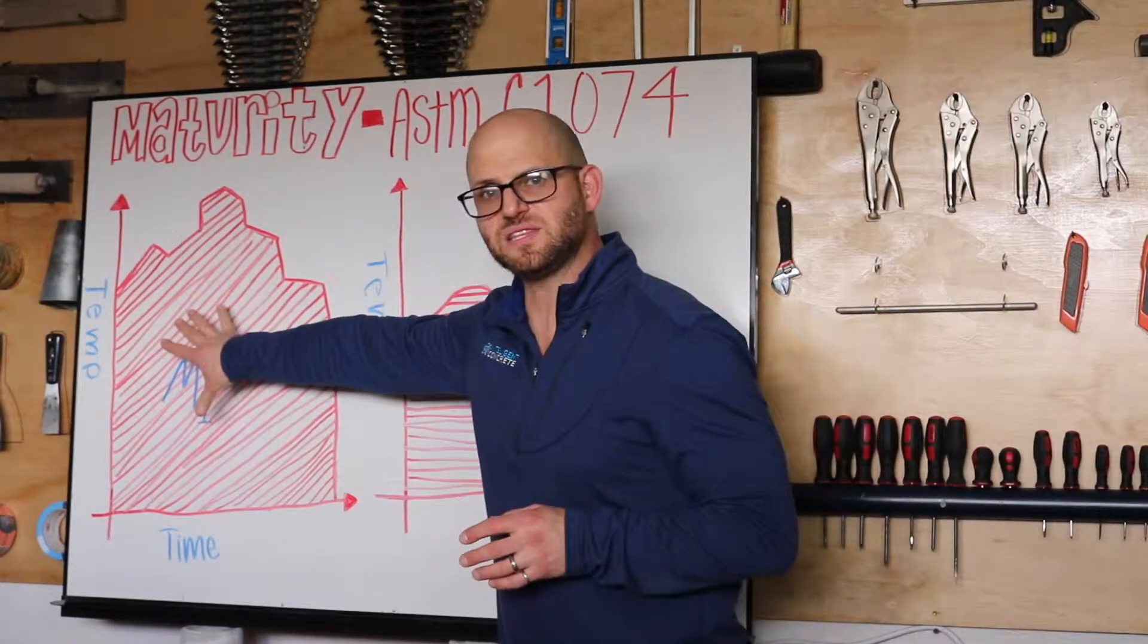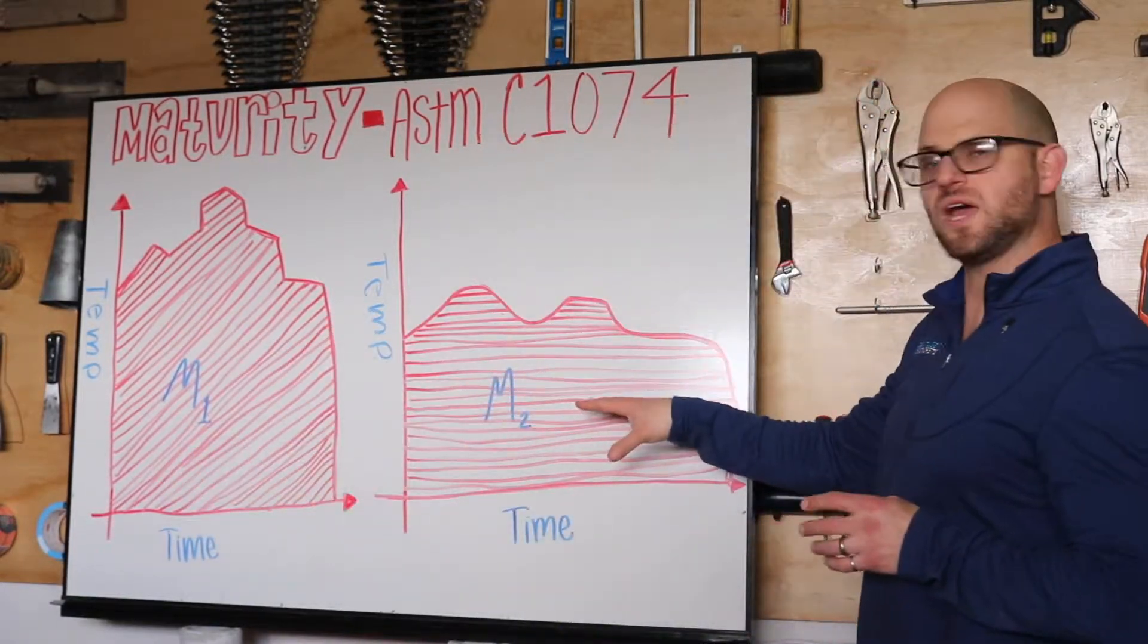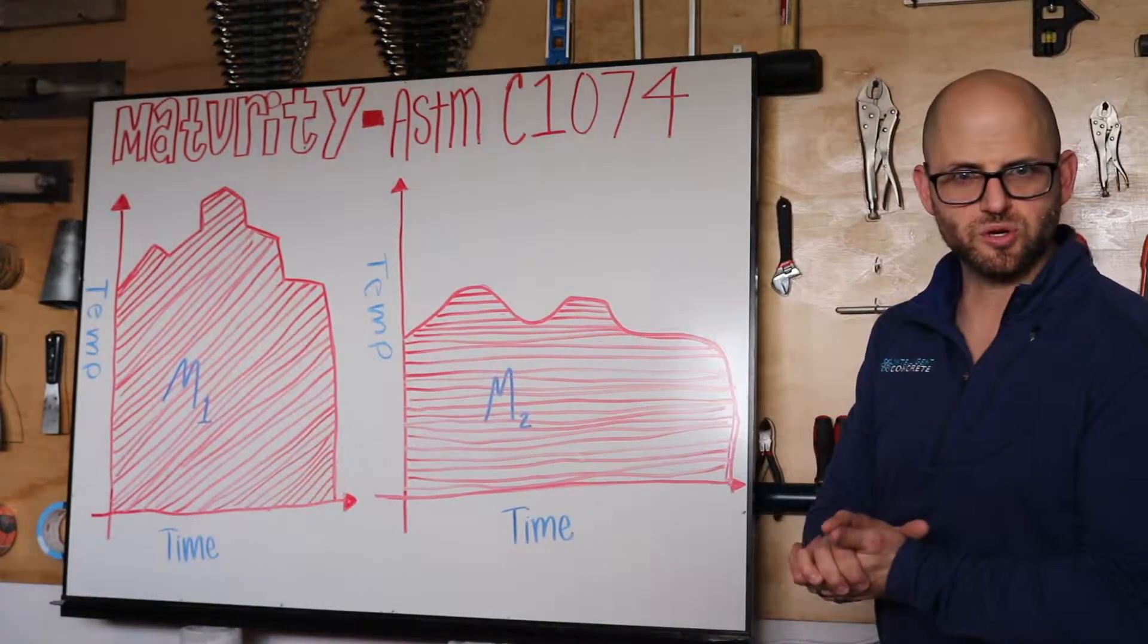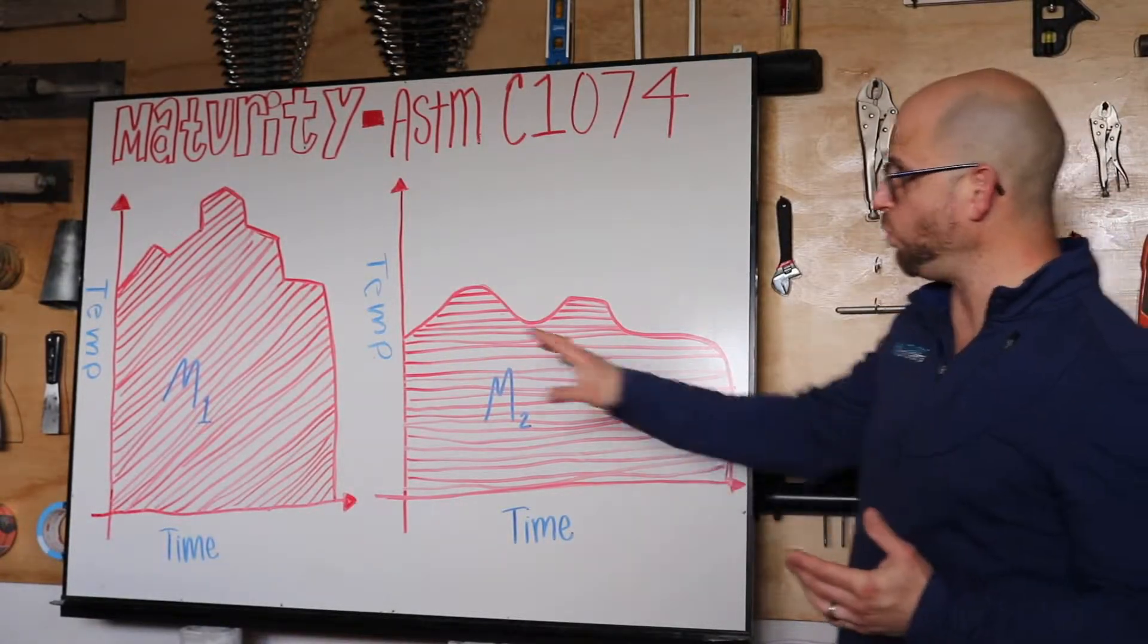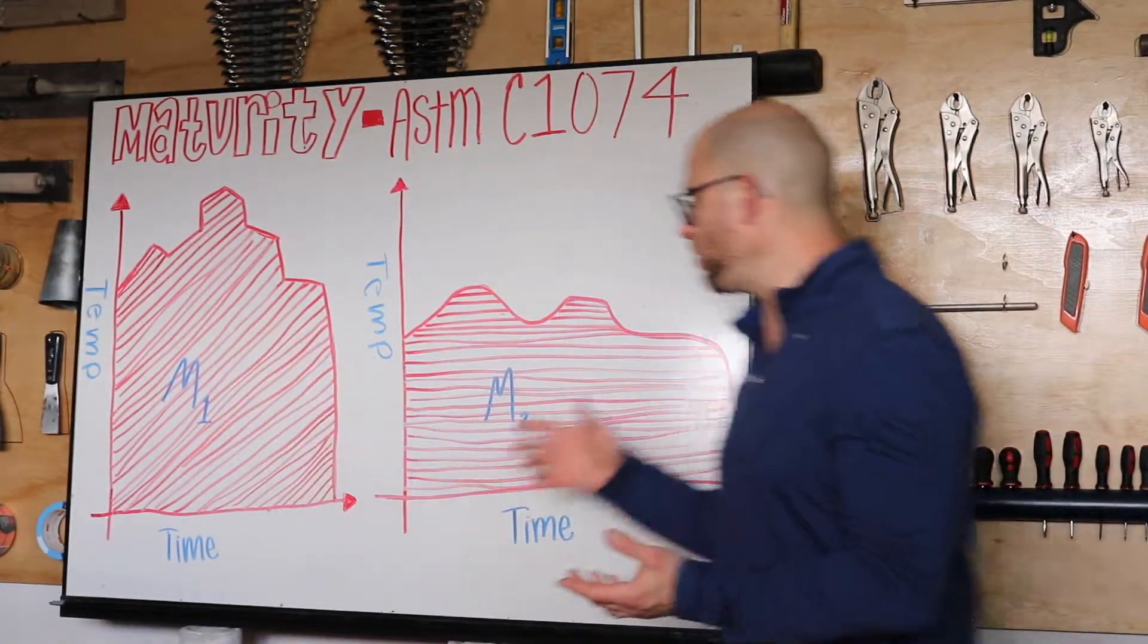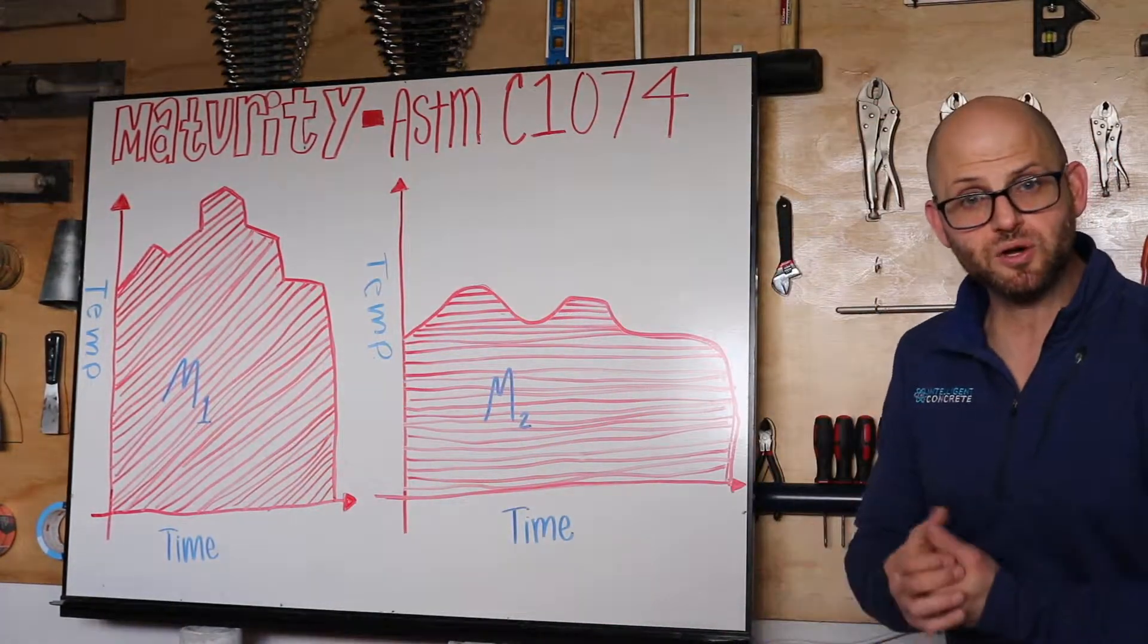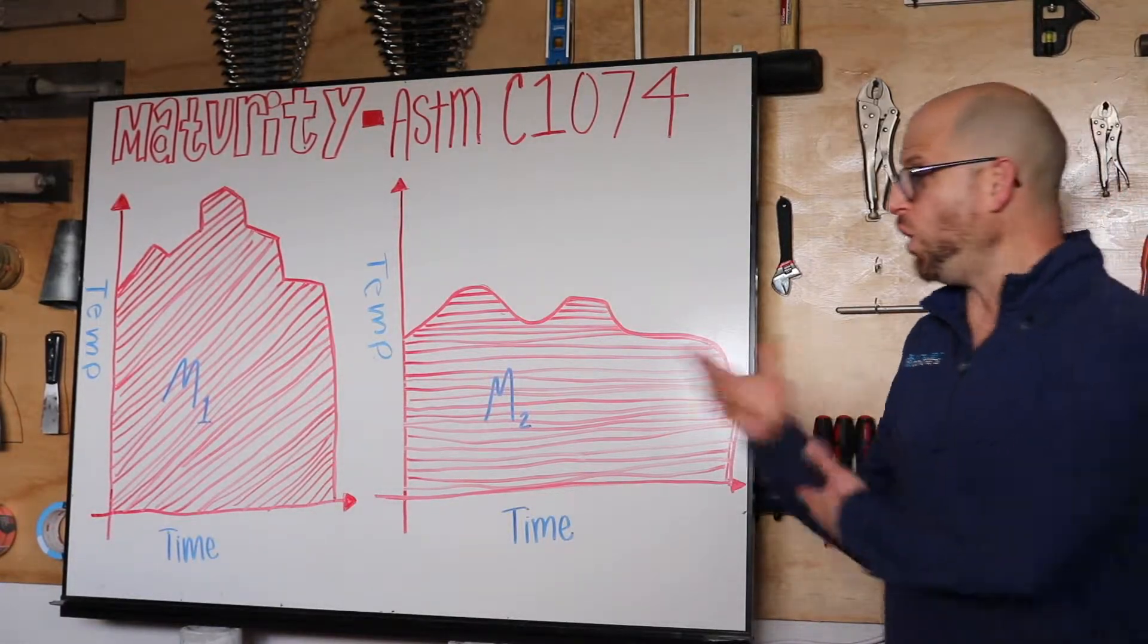Let's say we have the same mix poured on a hotter day, this is what your maturity curve would look like versus a colder day, this is what your maturity curve would look like. So in essence, whatever my reference told me, on a warmer day it doesn't take me as much time to get to that maturity and that strength. On a colder day I might have to wait a little bit longer to get to that same maturity or strength.